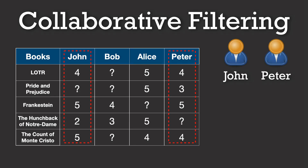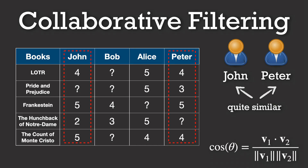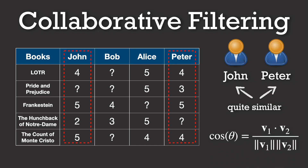One intuitive approach involves directly computing similarities between users. For example, if two users have rated many items in a similar fashion, we can quantify their similarity using a metric like the cosine similarity, which treats each user's ratings as a vector and computes the cosine of the angle between those vectors. Once we have a similarity score between users, we predict an unknown rating by taking a weighted average of the ratings from similar users.